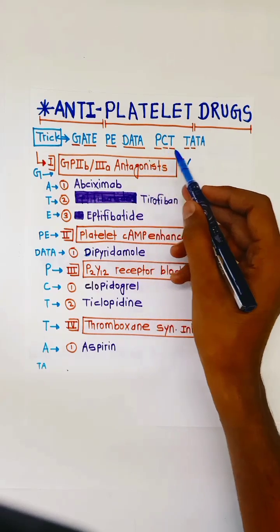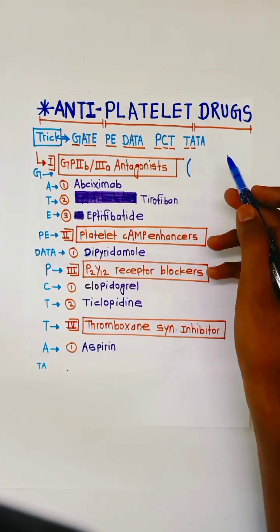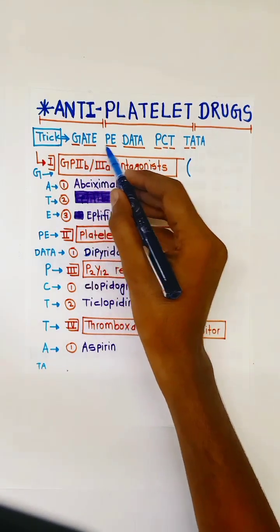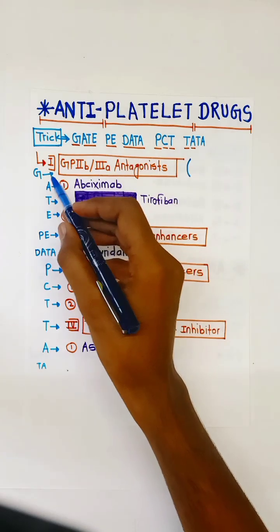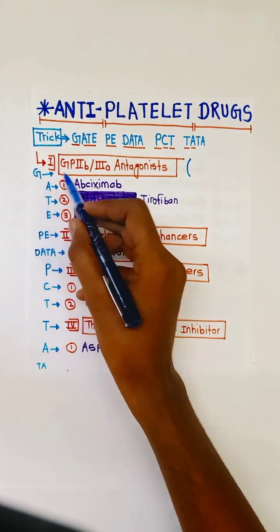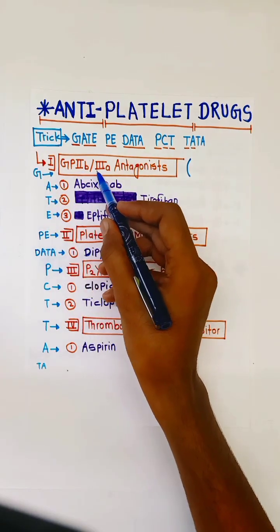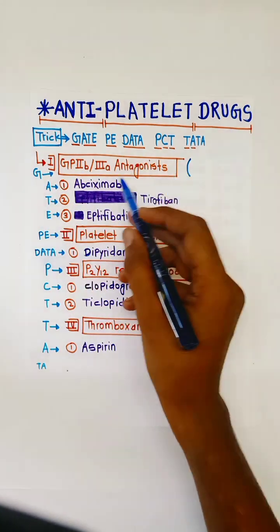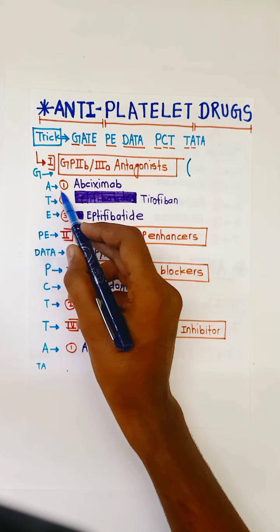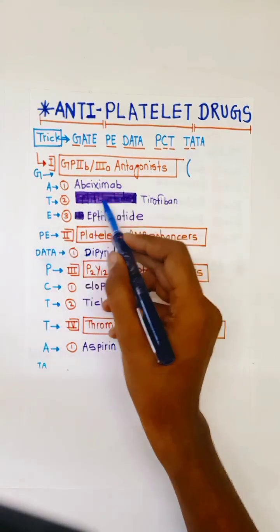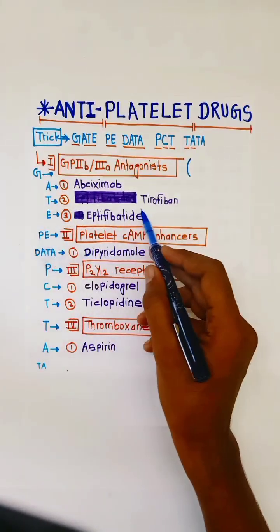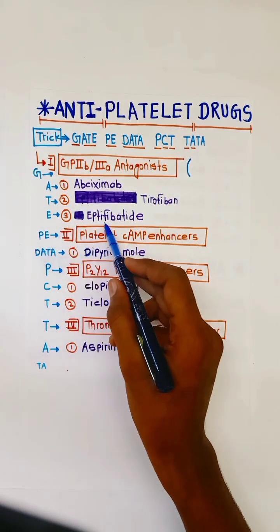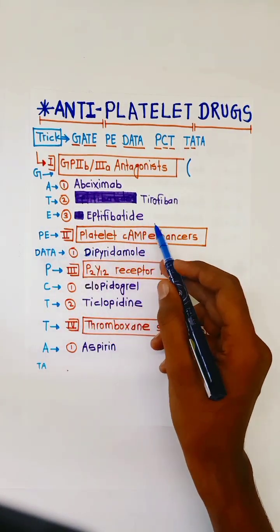GATE PE DATA PCT TATA. So G for GP2B3A antagonists — in this, A for Abciximab, T for Tirofiban, E for Eptifibatide.